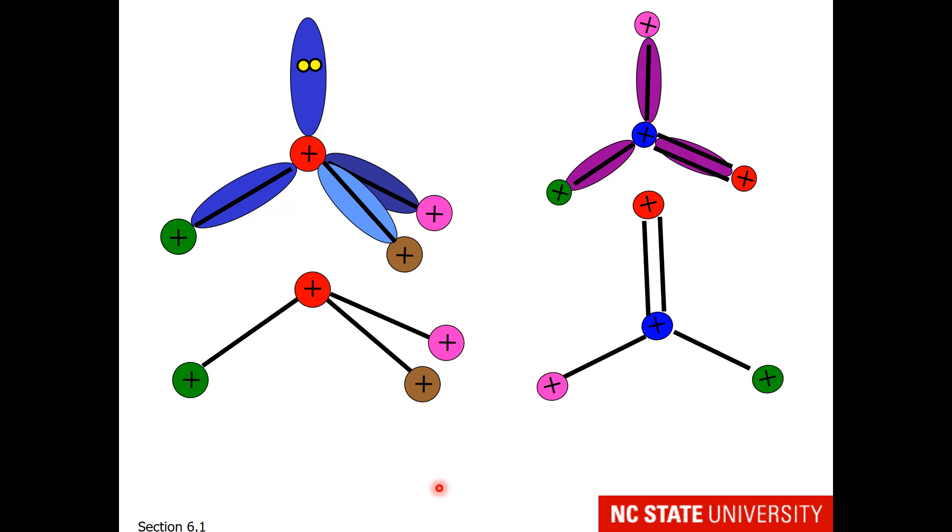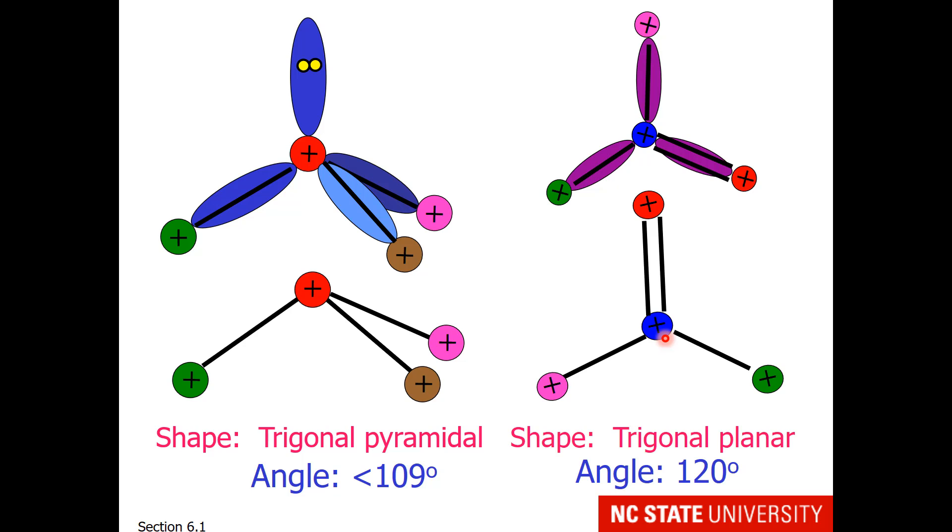So this slide is just to remind you that you have two possibilities when you have a central and three atoms. If you have a lone pair on that central atom, we call that trigonal pyramidal. And the angle is slightly less than 109. If you have three atoms and no lone pair cloud on that central atom, we call that trigonal planar. And the angle is 120 degrees.